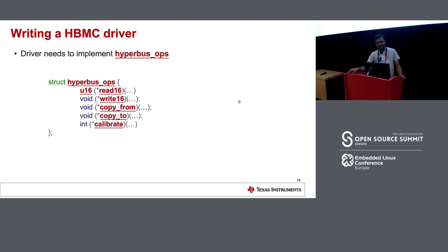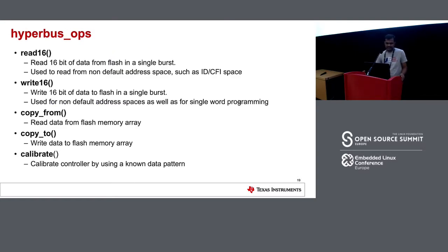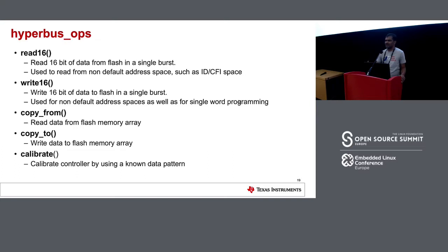If you are writing a HyperBus memory controller driver, you have to implement the hyperbus_ops which consists of five functions. The first is read16, which reads 16 bits of data in a single burst — mostly used to read from non-default spaces such as ID, CFI space, or status register space. Then there is write16, the complement of read16, used to write 16 bits of data in a single burst. There is copy_from and copy_to which handle the majority of reads and writes of data from the actual flash memory array.